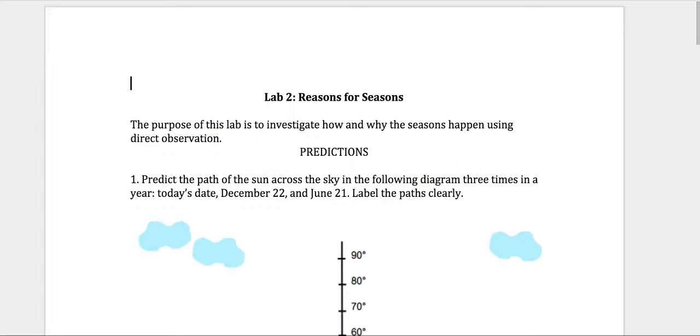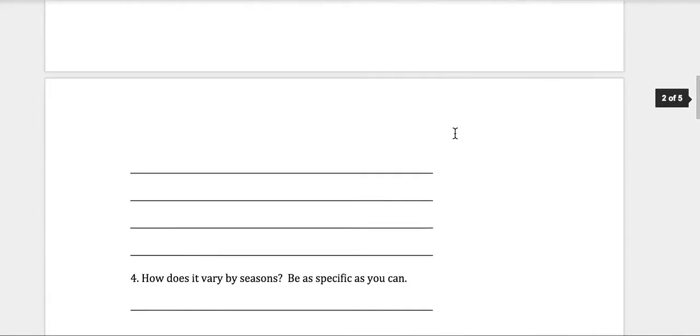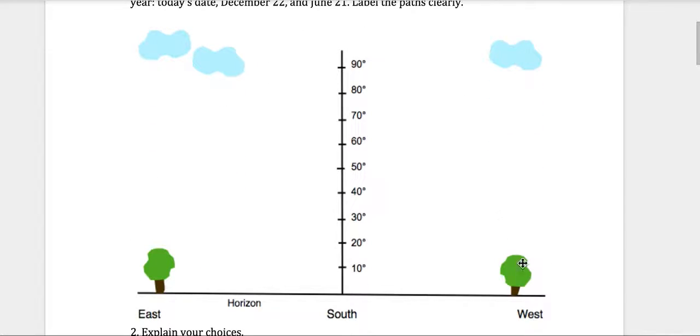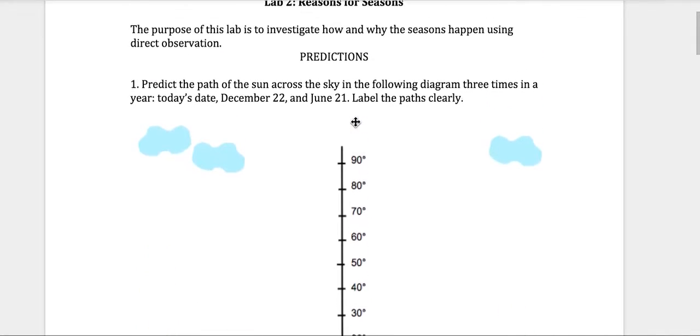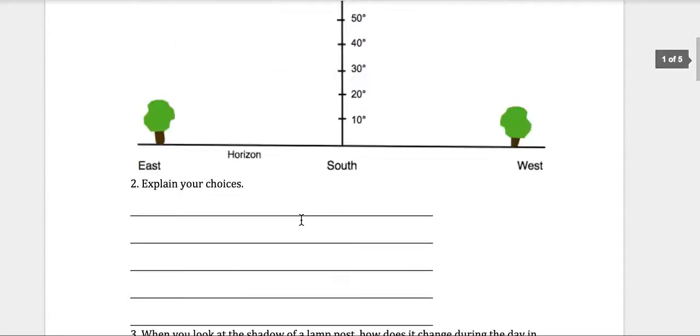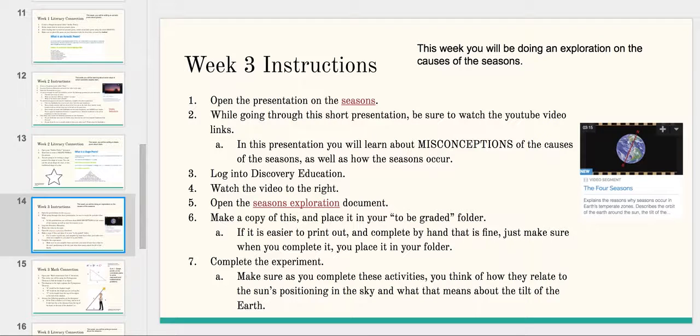Lastly, I want you to open this document called The Seasons. This one you might want to print out because it's easier to write on those lines. Also, the first one is going to take some drawing, so if you aren't sure how to use a drawing tool on the computer, you would want to print it out so that you can just draw that line. You can answer the questions on the lines, and there will be an exploration along with this lab. Make sure that when you're done with it, you put it into your To Be Graded folder.